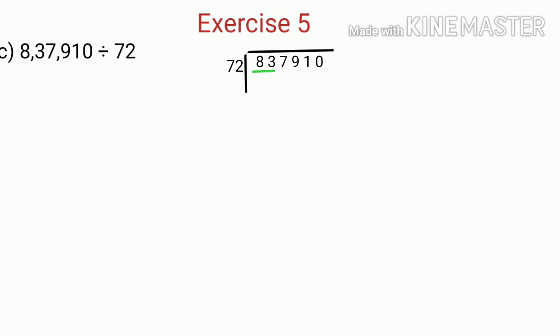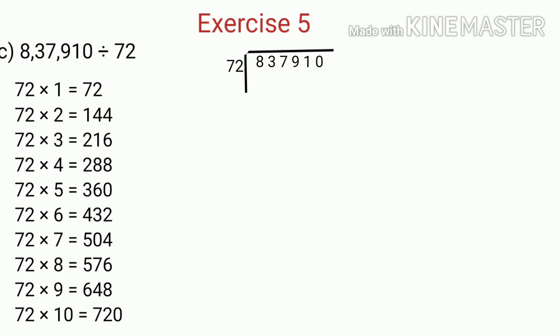Now let's solve number C of question number 1. In question number C, we have to divide 8,37,910 by 72. So in this question, we will divide a 6 digit number by a 2 digit number. At first, we compare the digits. We directly compare the leftmost 2 digits of the dividend with the divisor, because the divisor has 2 digits. Since 83 is greater than 72, the next step is to do the division. We have to find the product of 72 which is equal to, or less than, and nearest to 83. We get the nearest product as 72. So we write 1 in the quotient, because 72 multiplied by 1 is equal to 72. And then we subtract 72 from 83, which is equal to 11.